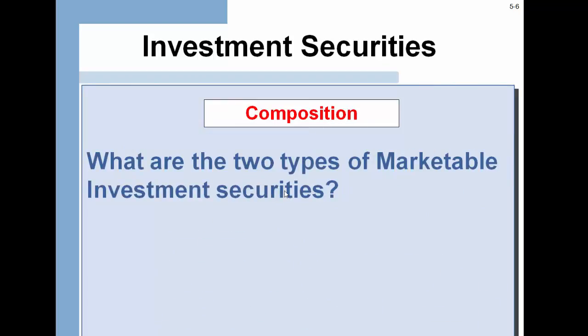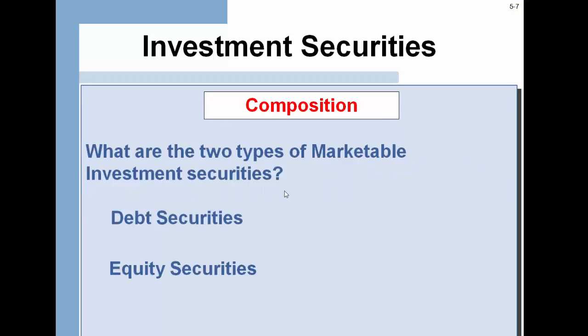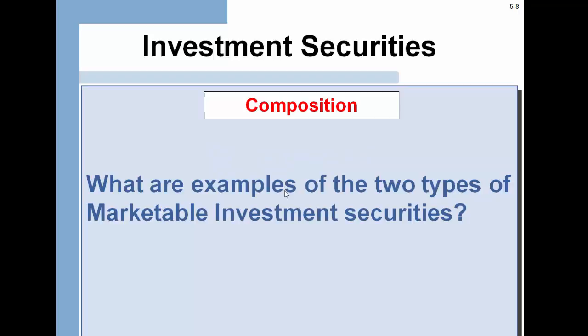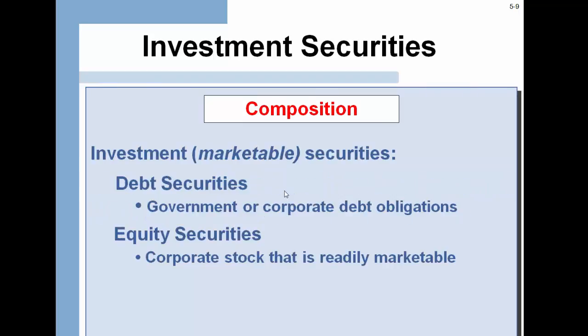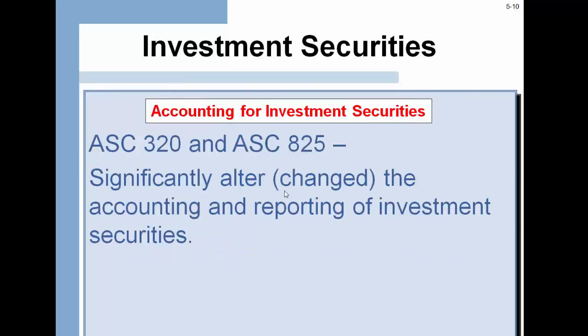What are the two main types of marketable securities? We have both debt securities, which would be primarily bonds, and equity securities, which are stocks. Accounting for securities is governed by ASC 320 and ASC 825.